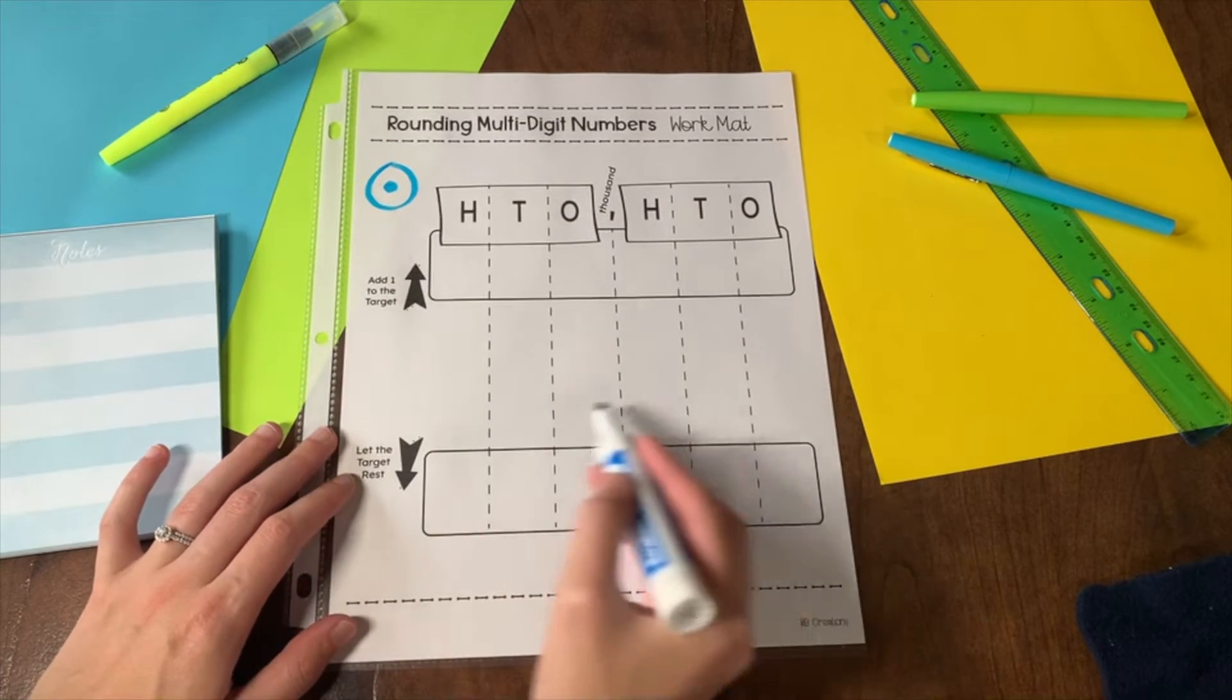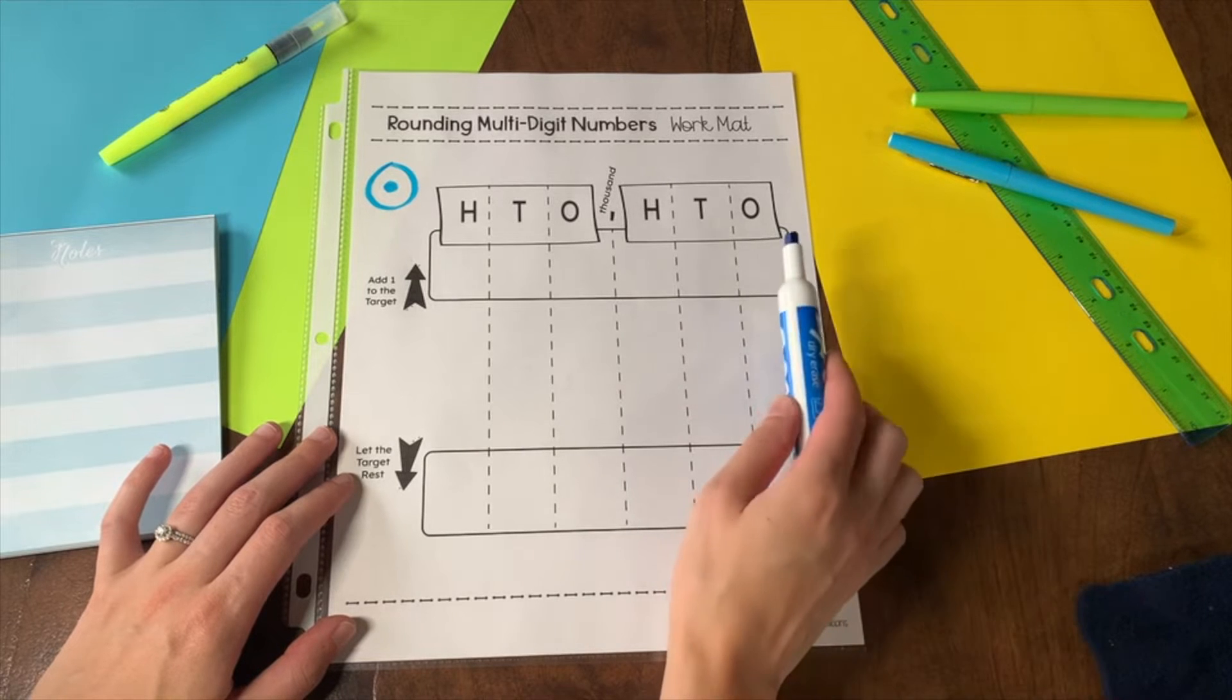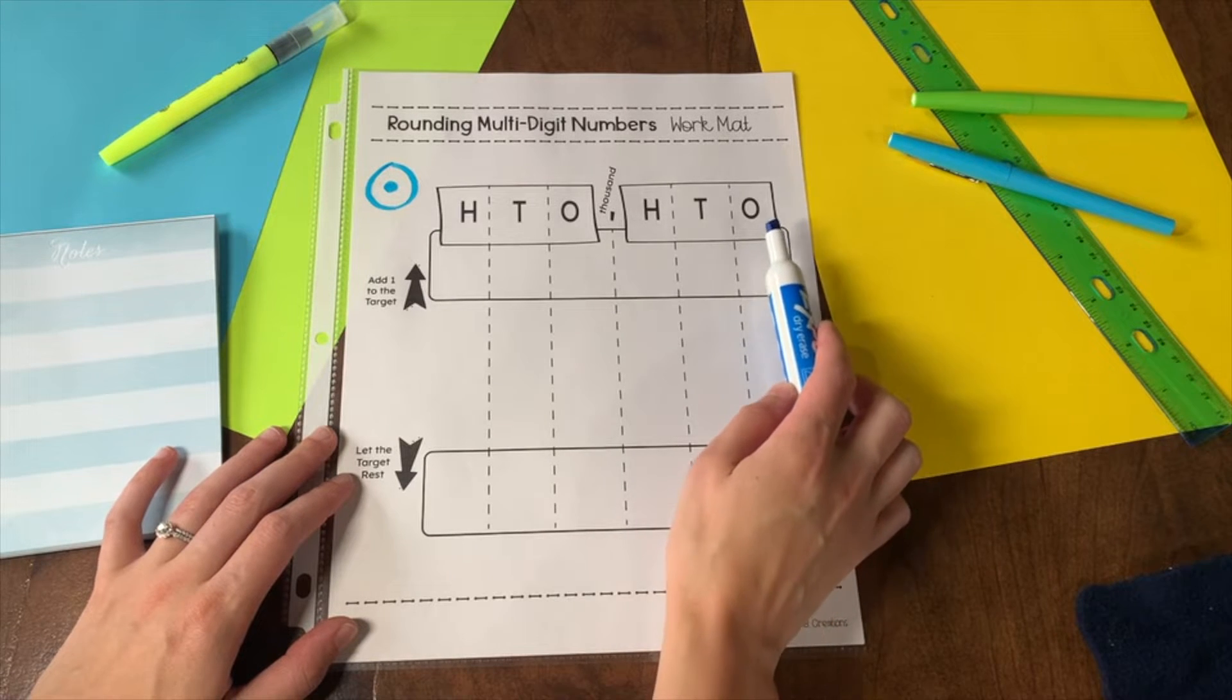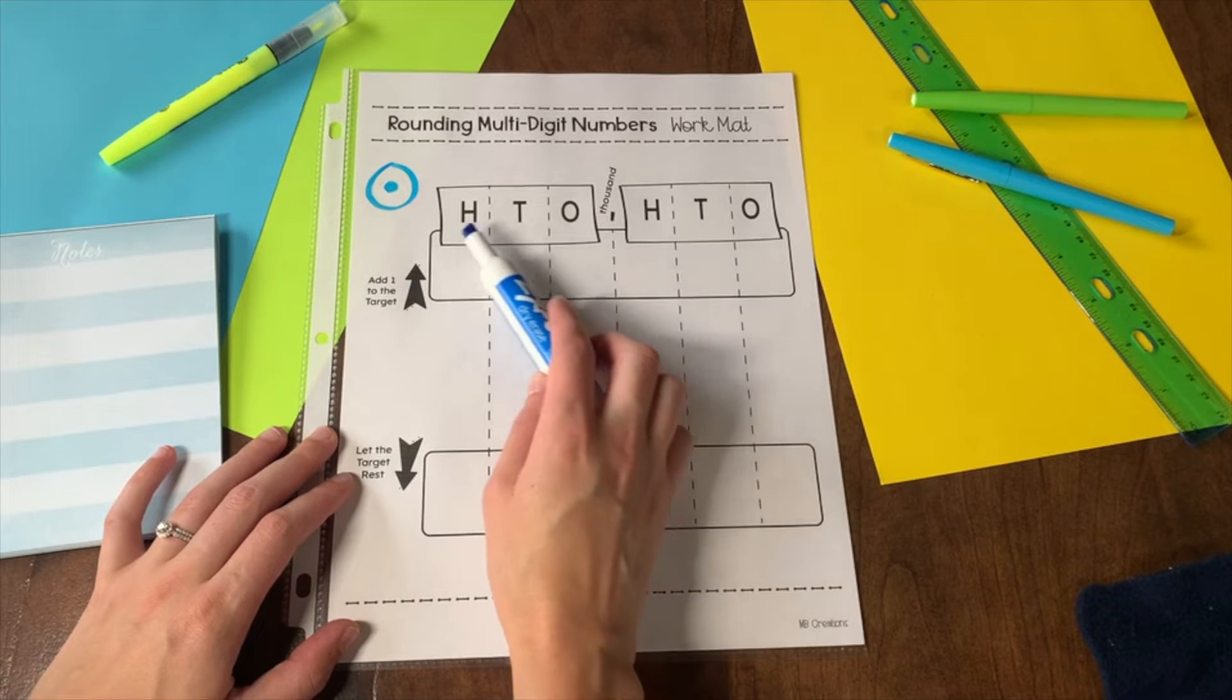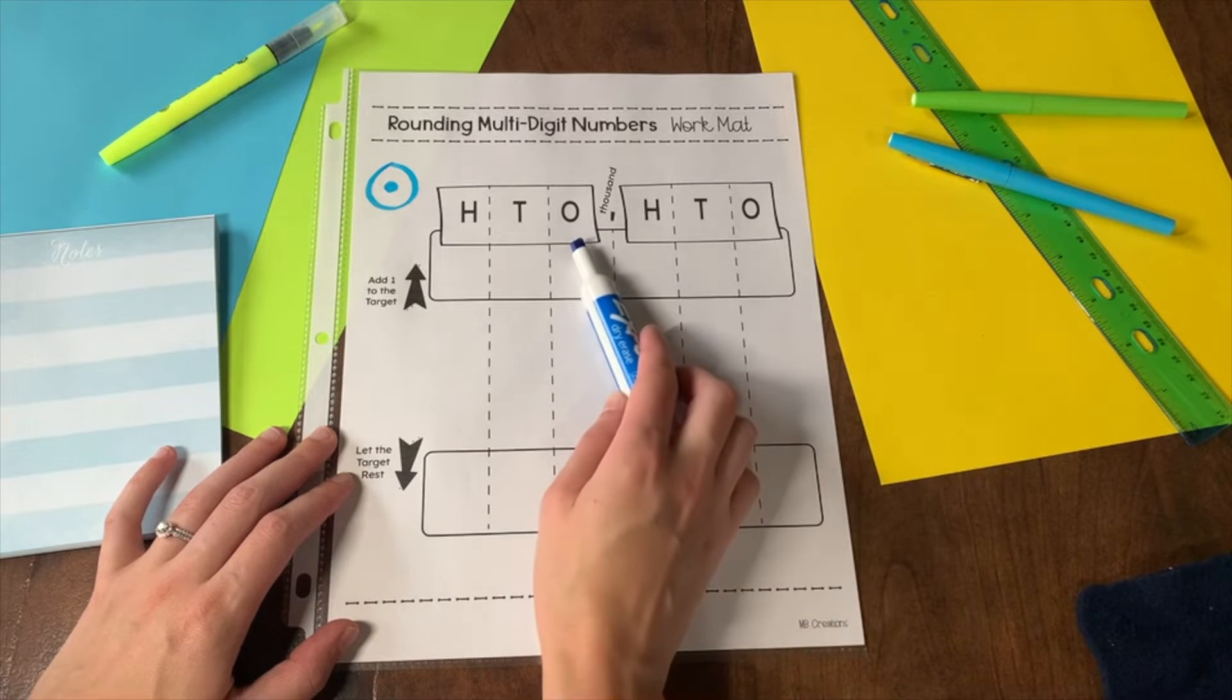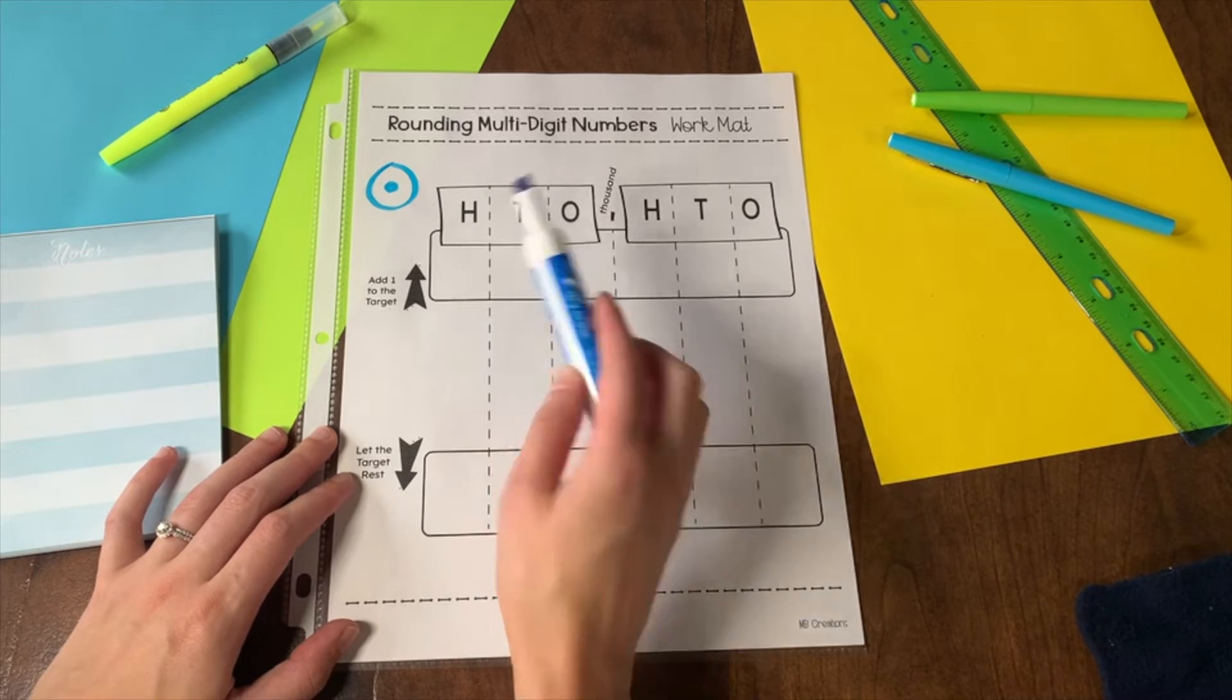Start by writing any number in our chart. You can see this is the same as a place value chart with ones, tens, hundreds. This pattern repeats in each period of numbers. This is 1,000, 10,000 and 100,000.